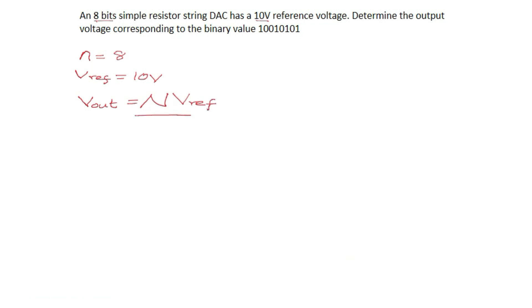This is the formula for a simple resistor string output voltage. Now we know we're given our small n, we're given our Vref, how do we get our capital N?